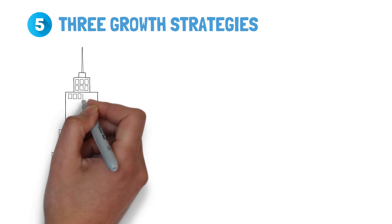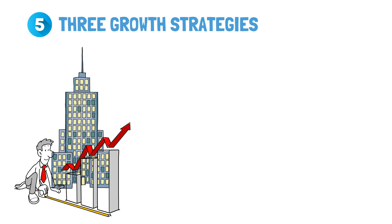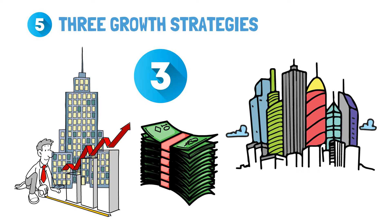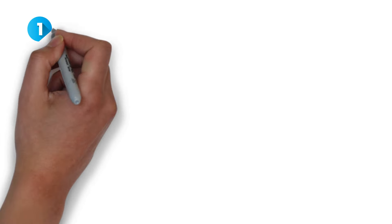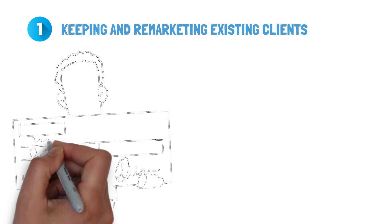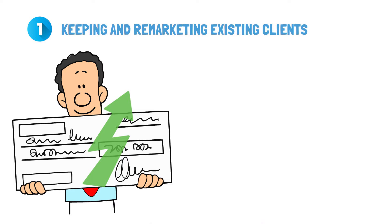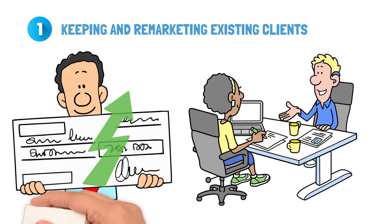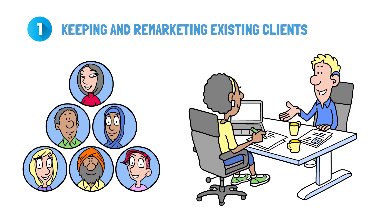Lesson five: three growth strategies. As you grow your firm, you should implement these three techniques to increase revenue and expand it. Number one priority: keeping and remarketing existing clients. This is one of the most effective ways to boost income because making money from existing consumers is significantly cheaper than recruiting new clients.